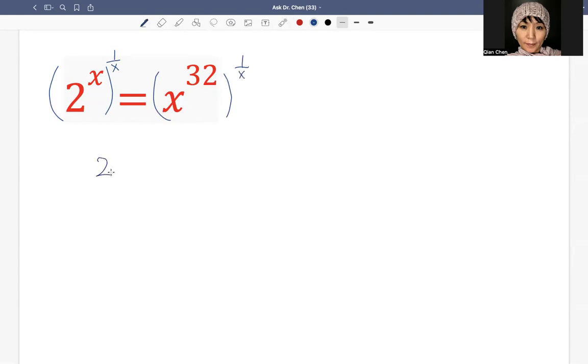Then we have, because x times 1 over x is just 1, so 2 raised by 1. Then this side, we have x raised by 32 multiplied by 1 over x. But we want to associate x with 1 over x, then raise by 32.